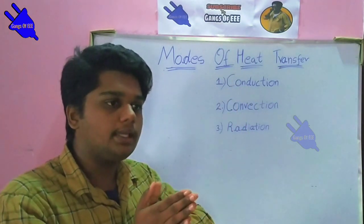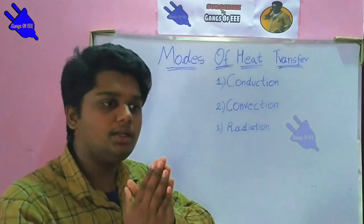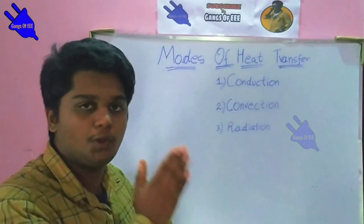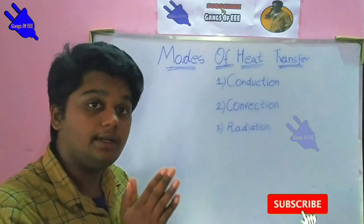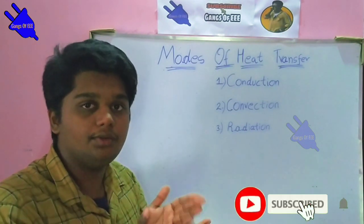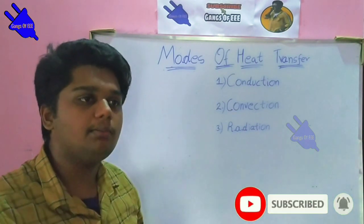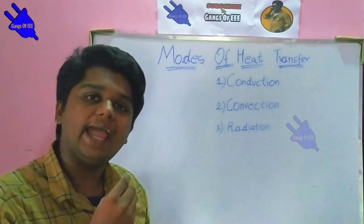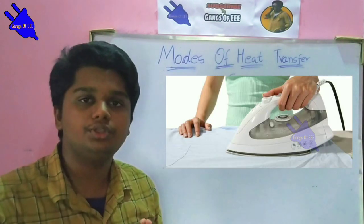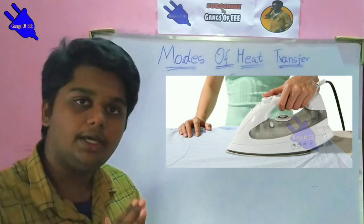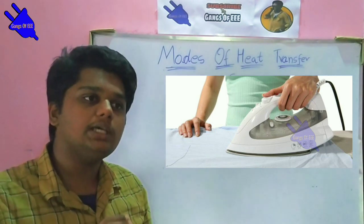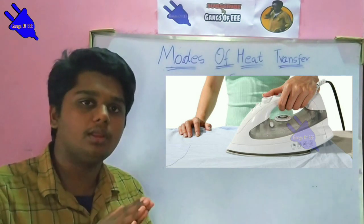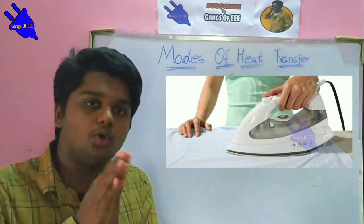For example, when the temperature is different from one side to another, heat flows differently. In this conduction example, you can see an iron box with cloth on the side. The heat from the iron box transfers to the cloth — that is conduction through a solid.